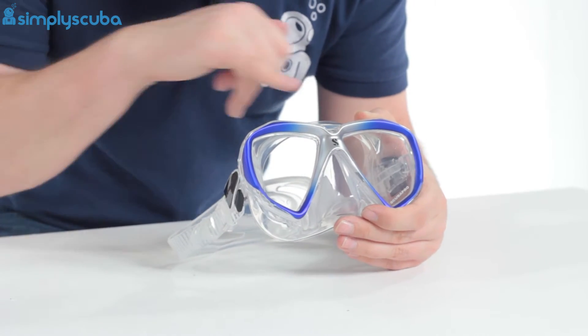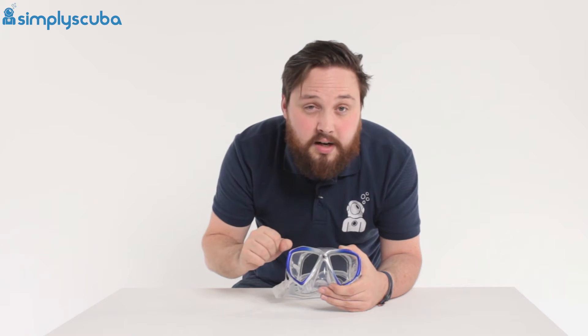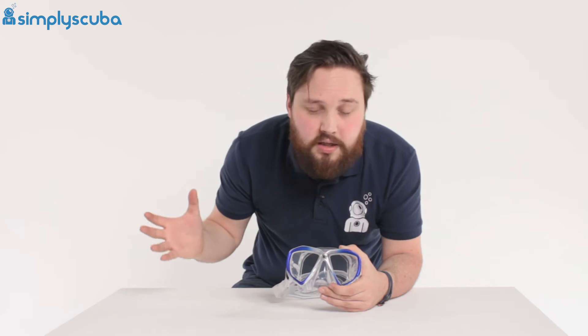This is a twin lens design. You have this modified teardrop lens, which accentuates your natural field of vision, makes it really easy to see your gauges at a glance and of course see the entire reef.